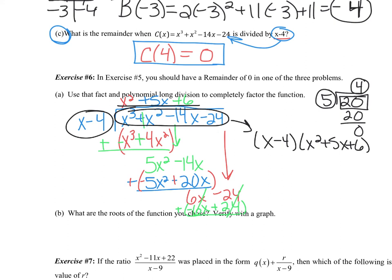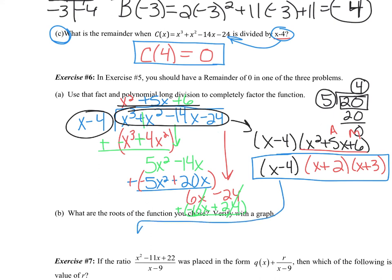Now we're completely factoring here. So we want to take it one step further. Let's just see if anything else factors. I can tell my x - 4 is done. But this trinomial, we do have numbers that add up to 5 and multiply to 6. So that's going to be positive 2 and positive 3 here. Now, based on this answer, if that's the factors of c(x), the roots of c(x), it says what are the roots of the function you chose? Basically, c(x) was the function we chose. Our x = 4, x = -2, and x = -3.